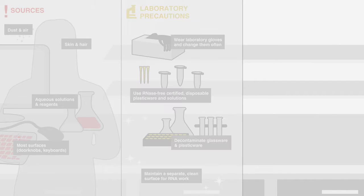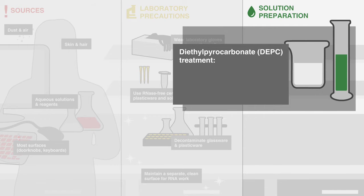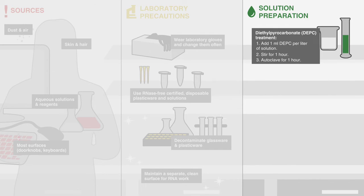How can you prevent contamination during solution preparation? DEPC treatment of solutions is accomplished by adding one milliliter DEPC per liter of solution, stirring for one hour, and autoclaving for an hour to remove any remaining DEPC.